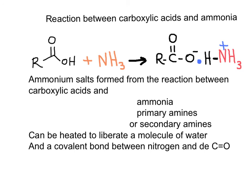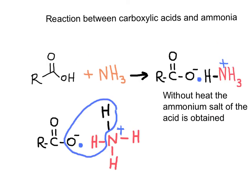A covalent bond between the nitrogen and the carbonyl will form only in a reaction between a carboxylic acid and ammonia, a primary amine, or a secondary amine. If the temperature is between 20 to 50 degrees, only the salt of the acid forms, but one molecule of water can be evaporated if the solution is heated above 100 degrees.